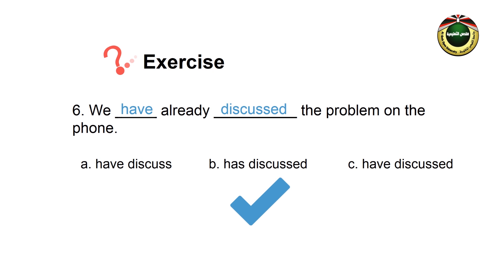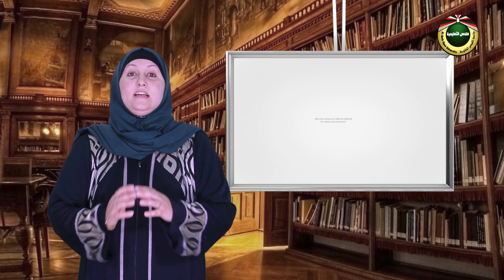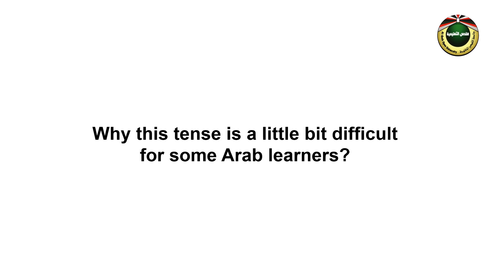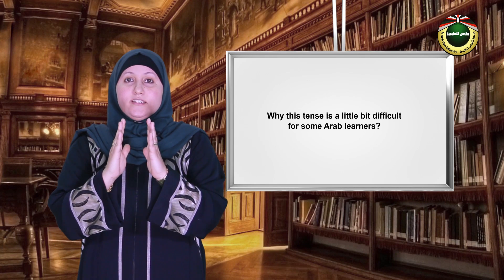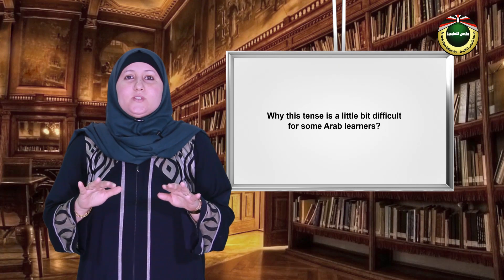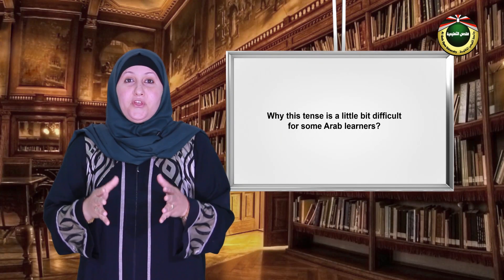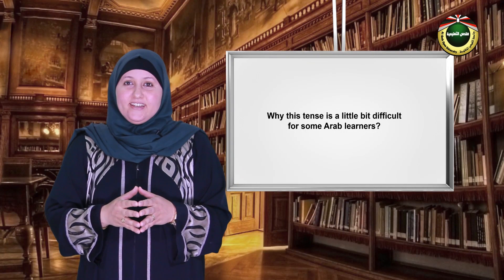Four: you _____ a lot since the last time I met you. Options: a) have changed, b) have changed, c) has changed. Well done — have changed — because the subject you takes have plus the past participle of the verb. Five: your mother _____ Jerusalem yet? Options: have visited, has visited, or hasn't visited. Has visited — excellent, because we have the word yet in a question so we don't use the negative. Six: we already _____ the problem on the phone. Options: a) have discussed, b) has discussed, c) have discussed. Well done — have discussed — because the plural pronoun we takes have plus the past participle, not has. Now, before I finish, let me ask you a question: why is this tense a little bit difficult for some Arab learners? The answer is because it has no clear or one-to-one equivalent form in Arabic. This explains why students rarely or even do not use it in their written or spoken language. So don't forget it — it's been there in the English language to be used by people who use English appropriately. Have a nice day and goodbye.